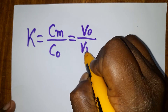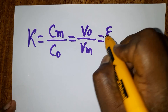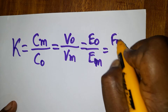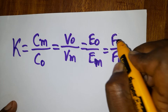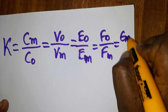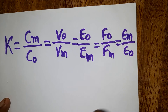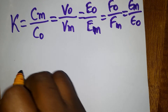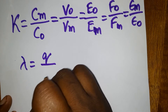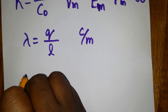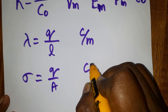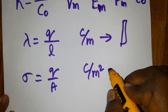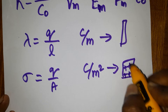Since Q = CV and V is inversely proportional to C, we get V₀/V_m = k. Voltage is directly proportional to electric field, so E₀/E_m = k. Force is directly proportional to electric field, so F₀/F_m = k. The permittivity ratio ε_m/ε₀ = k. Charge density lambda λ = charge per unit length (C/m), and sigma σ = charge per unit area (C/m²).